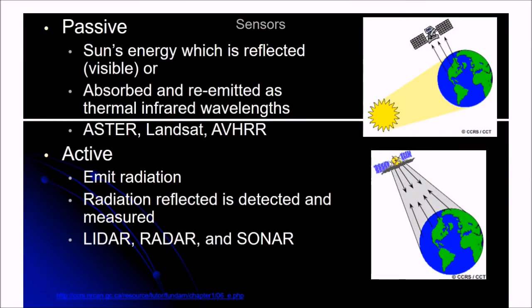So there can be two types of sensors, passive or active. Passive means the sun's energy which is reflected. This is the sun energy which is reflected or absorbed and then re-emitted as thermal infrared radiation. This can be sensed by the satellite.